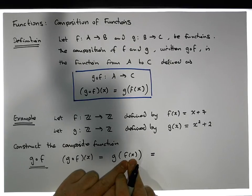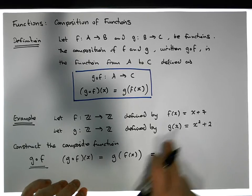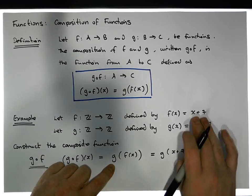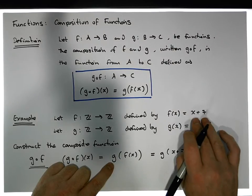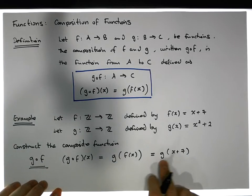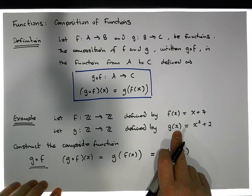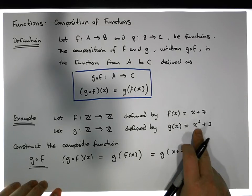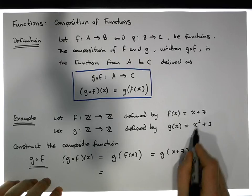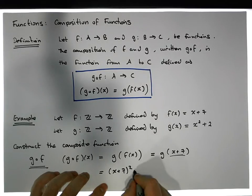Now let's do our substitution. We know that F of X is X plus 7, so this becomes G of X plus 7. We've passed this value into the function G as input. The function G takes X plus 7 as input, and its definition says for any input we square it and add 2. So G of X plus 7 equals X plus 7 squared, plus 2.